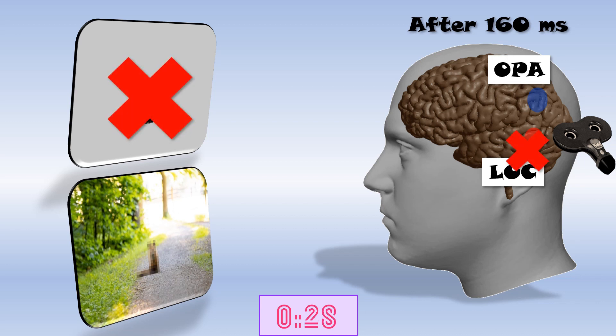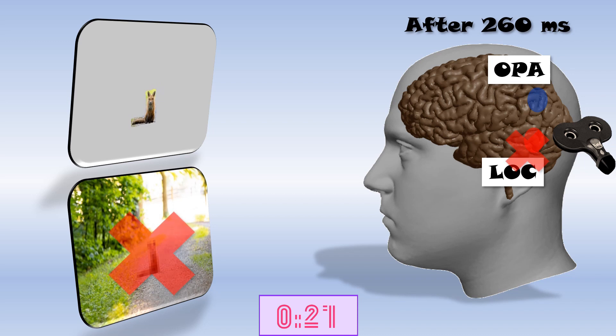And then there was the second time window, after 260 milliseconds, when the information about the scene is integrated to recognize a blurry object.